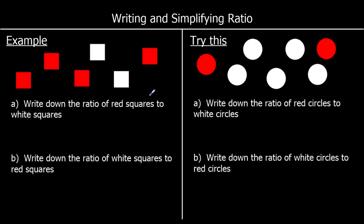So how many red squares do we have? We've got four red squares, so we're going to write four, and then we write a colon. So four, then we've got our colon, and then how many white squares have we got? Two. So it's four to two. The ratio of red squares to white squares is four to two. We can simplify this ratio because they're both in the two times table. So we can halve both of these numbers, and we can say the ratio is two to one. So the ratio of red squares to white squares is two to one.